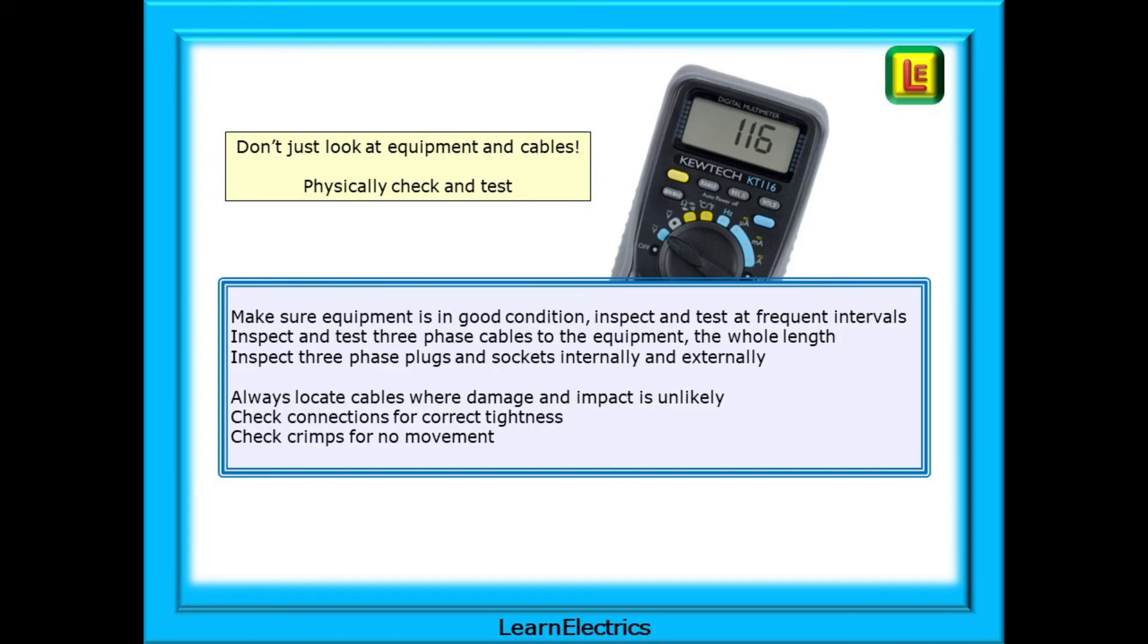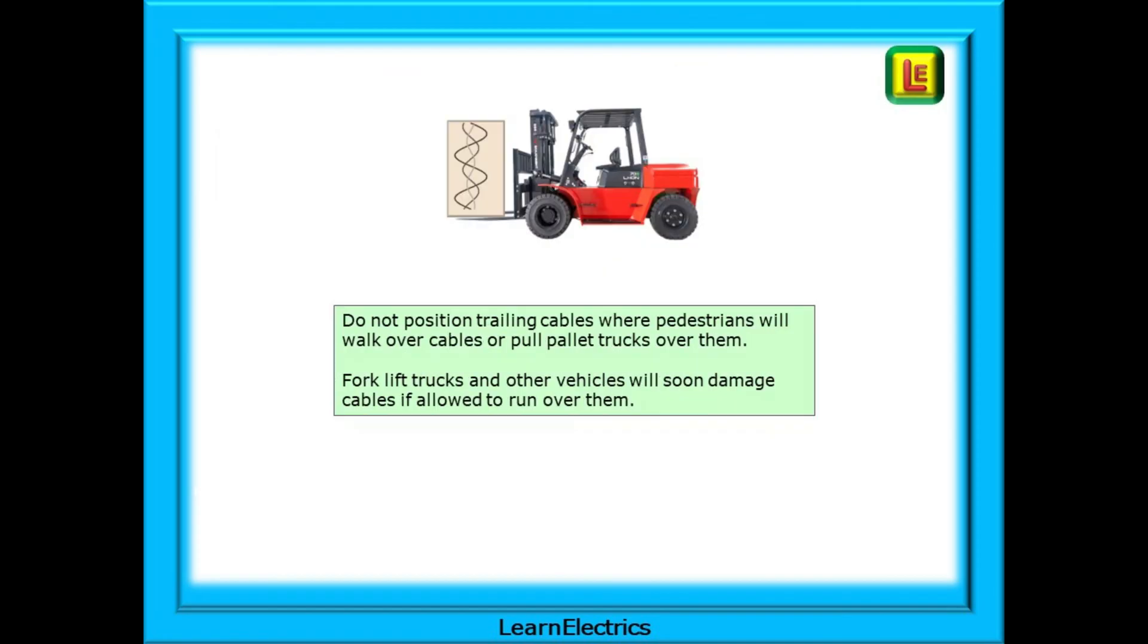Inspect and test three-phase cables that go to the equipment the whole length of the cable. Inspect three-phase plugs and sockets internally and externally. Locate cables where damage and impact is not likely and check connections for correct tightness and check crimps for no looseness. Vehicle and pedestrian movement is another possible source of damaged or broken connections. Do not position trailing cables where pedestrians will walk over the cables or pull pallet trucks over them. And forklift trucks and other vehicles will soon damage cables if allowed to run over them.